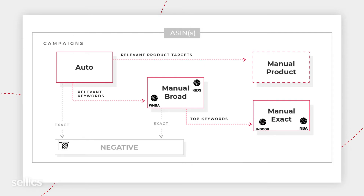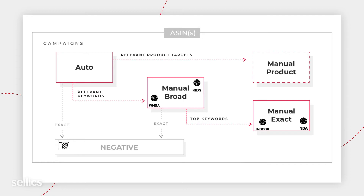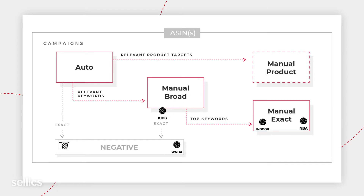We're left with Basketball for Kids and Basketball WNBA. These search terms are probably not going to convert because of a size discrepancy. Somebody searching for a Basketball for Kids or a Basketball for WNBA is looking for basketballs of a smaller size. Therefore, our product will not match what they're looking for and clicks are not going to convert into orders. After a while, Selix will recognize this and set these terms to negative.